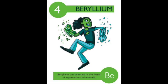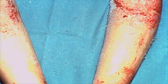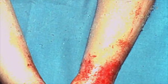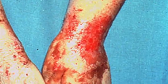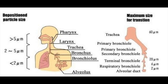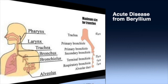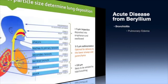Skin exposure to beryllium may cause contact dermatitis, subacute granulomatous nodules, ulceration, and delayed wound healing. Lung disease is the most common and the most concerning. In acute disease, high levels of beryllium exposure can result in inflammation of the upper and lower respiratory tract and airways, causing bronchiolitis, pulmonary edema, and chemical pneumonitis.